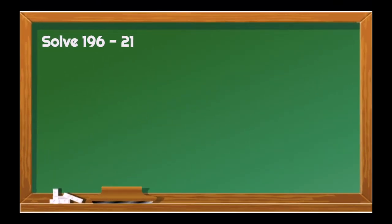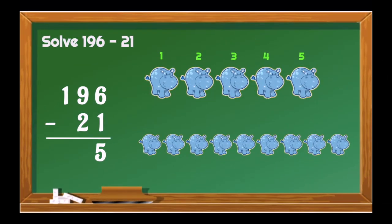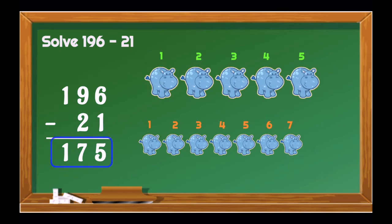For our third example: 196 minus 21. We start with 6 minus 1, which gives us 5. Let's proceed with the 10's place: 9 minus 2 gives us 7. Then let's just bring down the 1. So, 196 minus 21 would give us 175. We're doing great, learners!